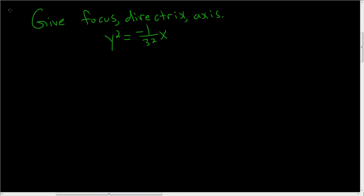We're asked to find the focus, directrix, and axis of the following parabola. So because the y is being squared, we know the formula is (y - k)² = 4c(x - h).